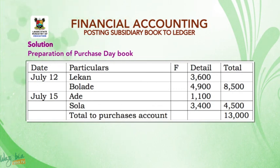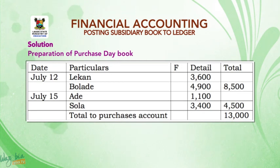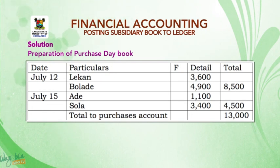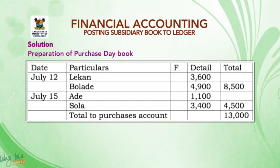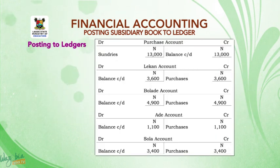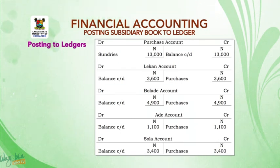Solution — preparation of purchase day book: five columns of dates, particulars, folio, detail, and total. July 12: Lecon detail 3,600; Bolady 4,900; sub-total 8,500. July 15: Adi 1,100; Shola 3,400; sub-total 4,500. Grand total 13,000, to be posted to purchase account.